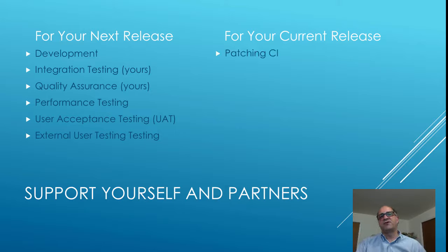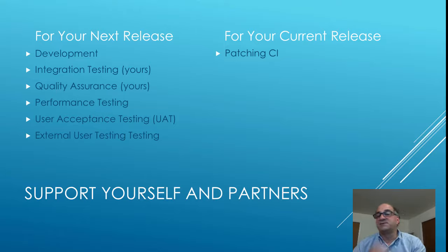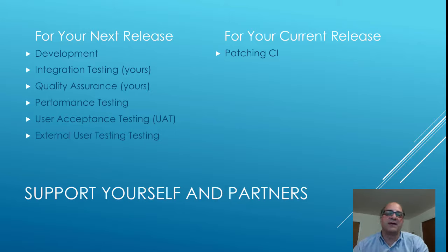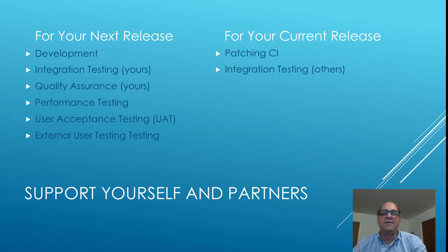For your current release, you actually have to support code fixes and you've got to support having current code somewhere so that partner teams releasing between your releases have a place to come and test against. The first of those is a patching CI environment. A lot of places will build a CI continuous integration environment for their production branch and migrate that across production branches. That way, if you make patches on the production branch, you actually run tests. I've seen places that don't do this, and they find out none of their tests run on their production branch because a developer put in a quick fix that broke some tests.